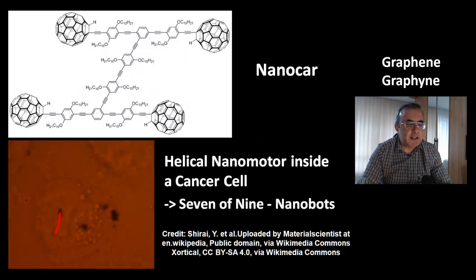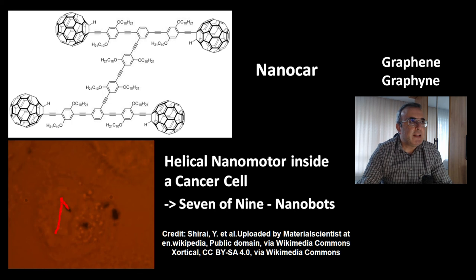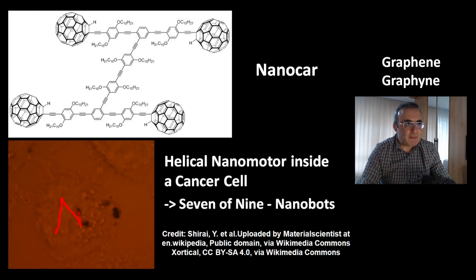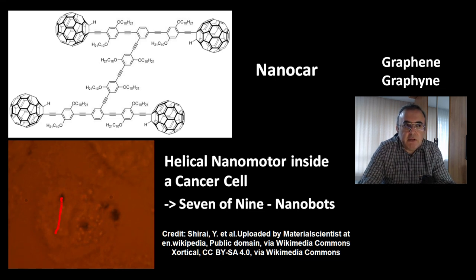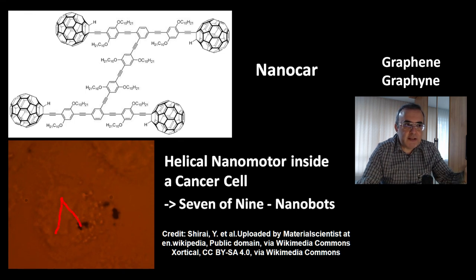Here is a very interesting molecule: a nanocar. It has wheels made of fullerene, and since the C-C single bond can rotate, this car has working wheels — but it has no motor. The picture at the bottom shows a helical nanomotor inside a cancer cell. The combination of all these techniques — nanocars, nanomotors, nanosensors, and new materials — could one day give you nanobots, like in the character Seven of Nine in Star Trek Voyager. These nanobots could do all kinds of work in the human body and could practically repair it, which is why this science is very relevant and could potentially save human lives.